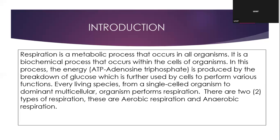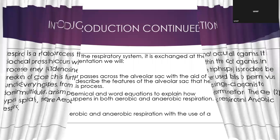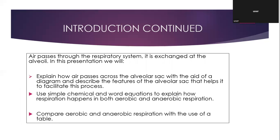These are aerobic respiration and anaerobic respiration. Basically, respiration requires oxygen, and every living organism from single-celled organisms to multicellular organisms like trees and so on — every living thing respires. In this presentation, we will explain how air passes across the alveolar sac with the aid of a diagram, describe the features of the alveolar sac that help it facilitate this process, use simple chemical and word equations to explain aerobic and anaerobic respiration, and finally use a table to compare aerobic and anaerobic respiration.